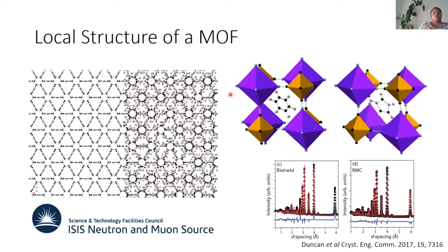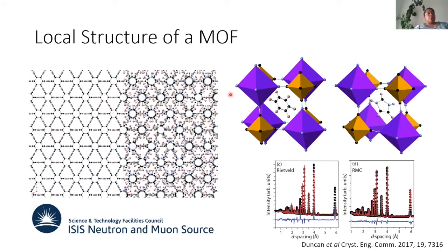So we used total neutron scattering and reverse Monte Carlo modeling to investigate the dynamics of this MOF. We thought we'd see two phase transitions driven by ordering of the guest molecule with respect to the framework. We made around 50 unique models of 10,000 atoms each at each temperature point, all consistent with our scattering data. We found no appreciable ordering in the guest molecule within the framework. Instead, we found an increase in rigidity of the framework. Could we have found this from the Bragg average structure alone? Absolutely not - we had to do total scattering. And if we'd used X-rays, we wouldn't have been able to accurately position the hydrogens. For this particular question, neutrons were exactly the right tool for the job.